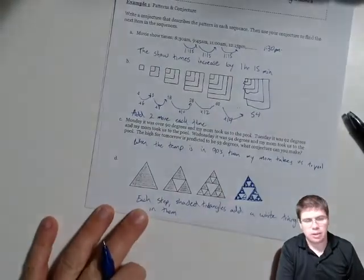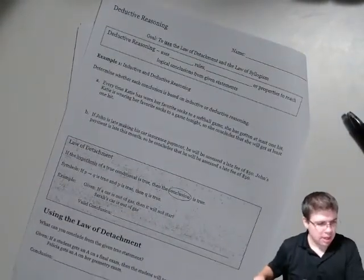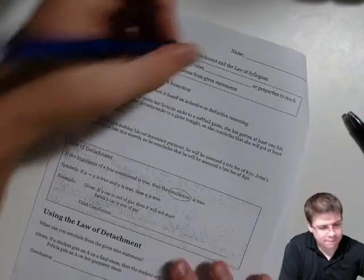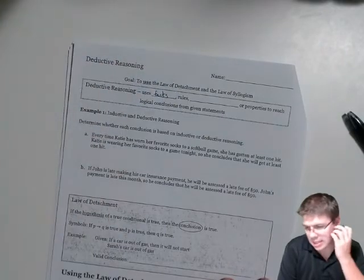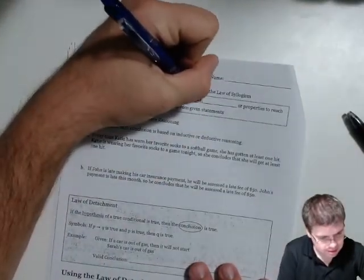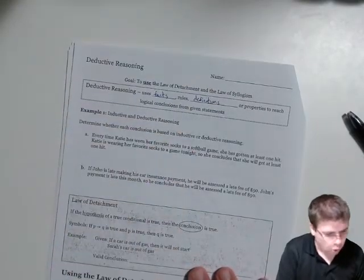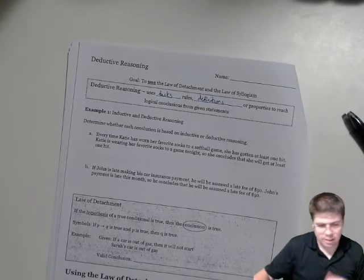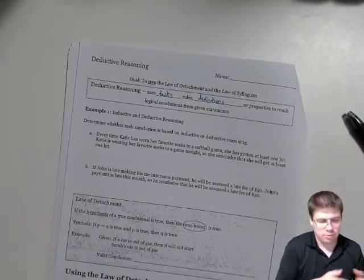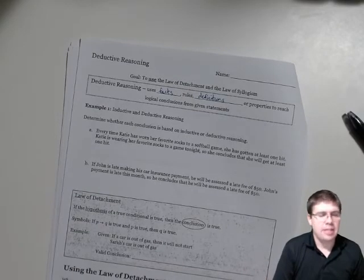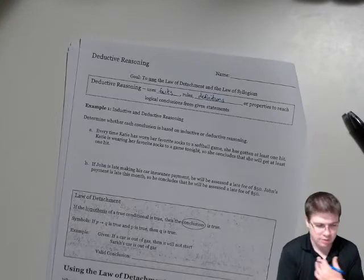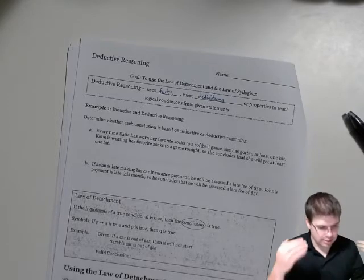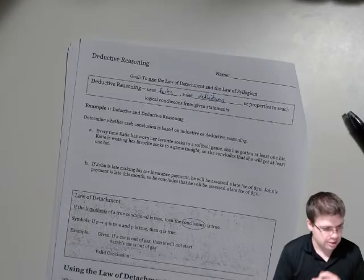So then we add deductive reasoning to the mix. Deductive reasoning uses facts and rules and definitions or properties to reach logical conclusions from given statements. We use this to make our proof. Ultimately proof is based on this. We use inductive reasoning to maybe come up with rules and try and figure out what the rules are and prove things, but deductive reasoning is kind of our rigid logic or proof.